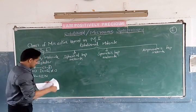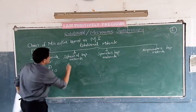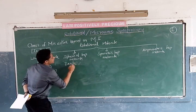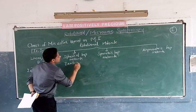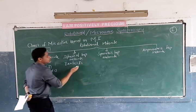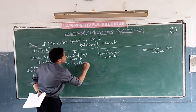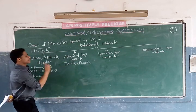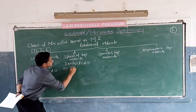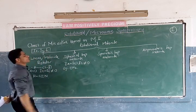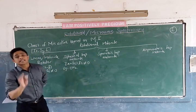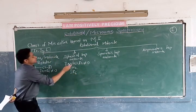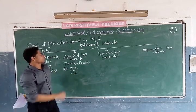Coming to spherical top molecules: here Ia is equal to Ib, the moment of inertia along x-axis equals that along y-axis, which equals that along z-axis. But all three are not equal to zero. The best examples for spherical top molecules are methane (CH4) and SF6 (sulfur hexafluoride).